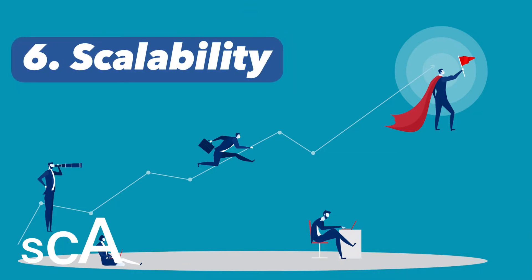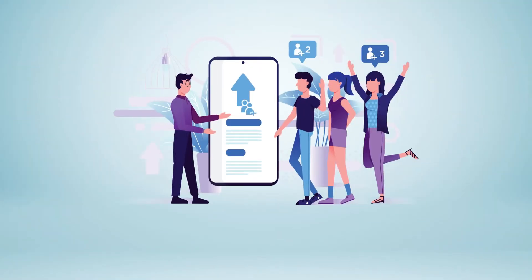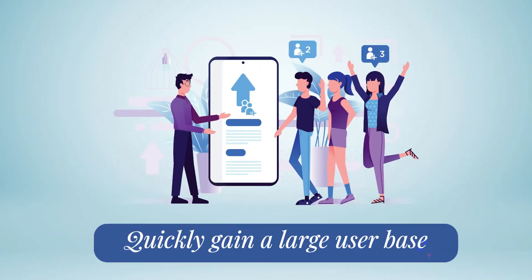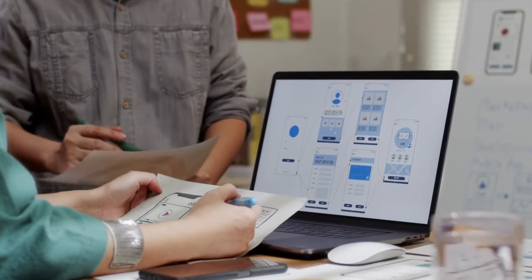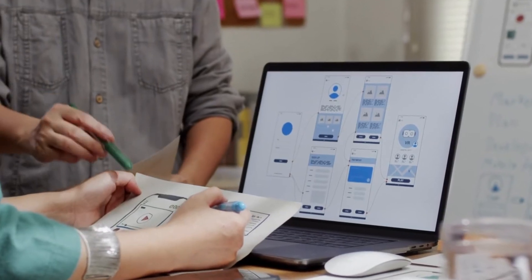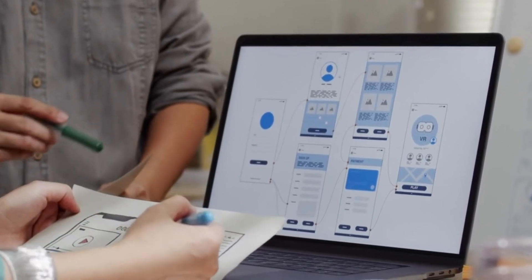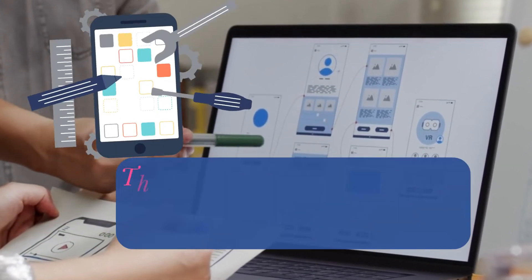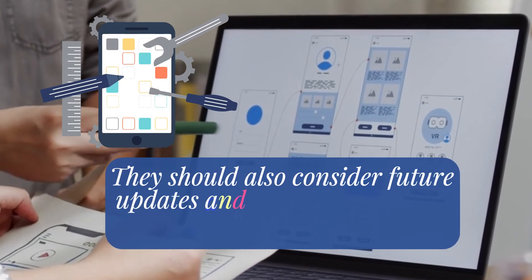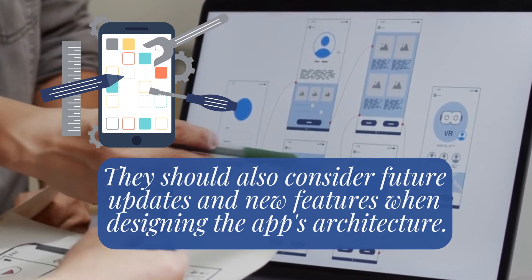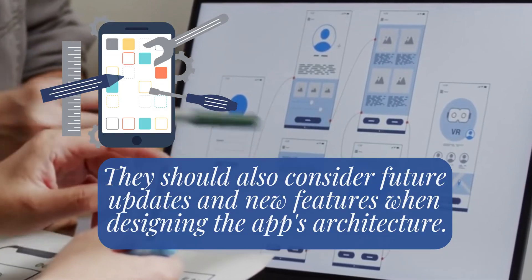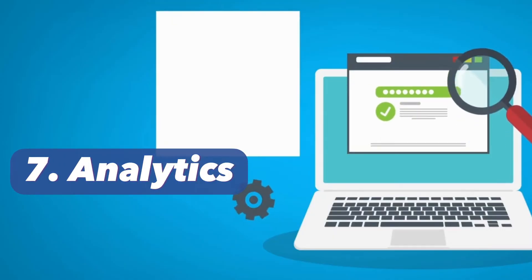The sixth best practice is to design for scalability. A successful mobile app can quickly gain a large user base, so developers should design the app to handle increasing traffic and user demand. They should also consider future updates and new features when designing the app's architecture.